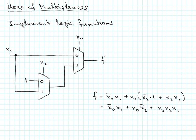Another use for multiplexers is to actually implement logic functions as shown in this example here. So we have three variables here, x0, x1 and x2. So the function f here is equal to a function of x2, x1 and x0.